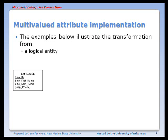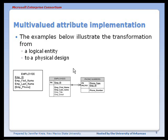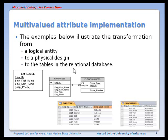The example shows how you go from a logical entity with a multi-valued attribute to the physical design, where the multi-valued attribute becomes a separate entity, and then to the tables in the database. So we have an employees table and a phone numbers table. We have Daryl Jackson as an example with an employee ID of 5014. That employee ID will show up as many times as Daryl has phones that we want to keep track of the numbers for — so he has a cell phone number and a home phone number.